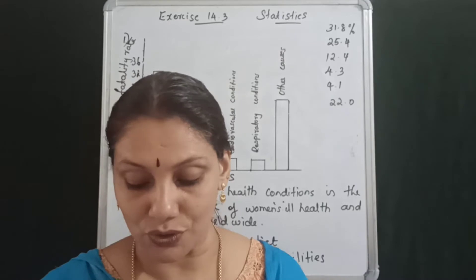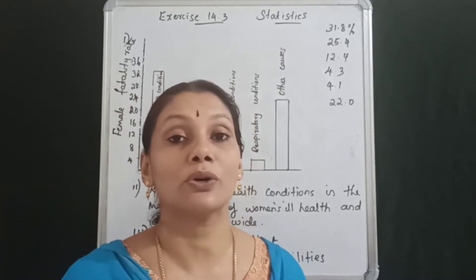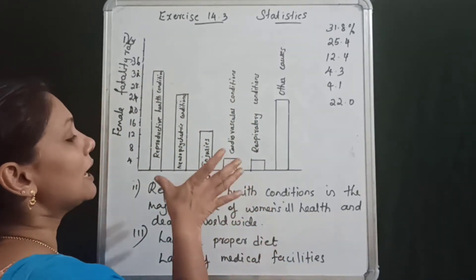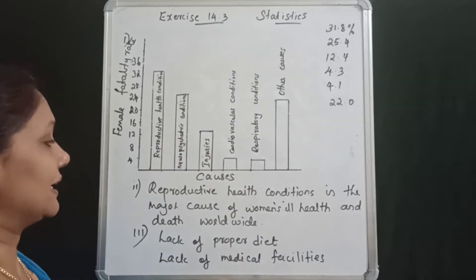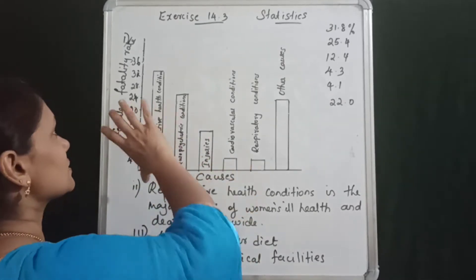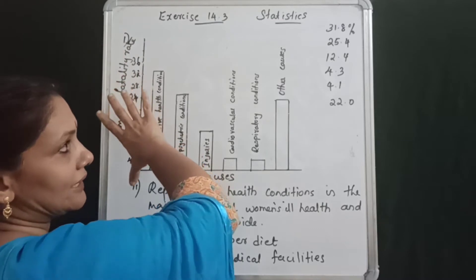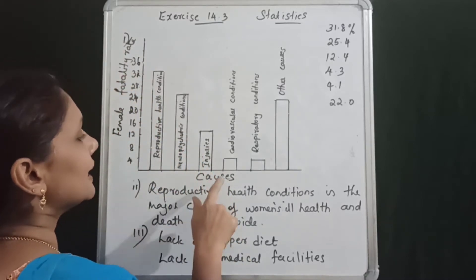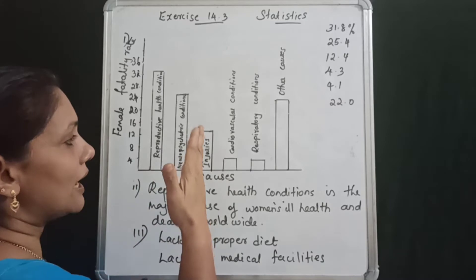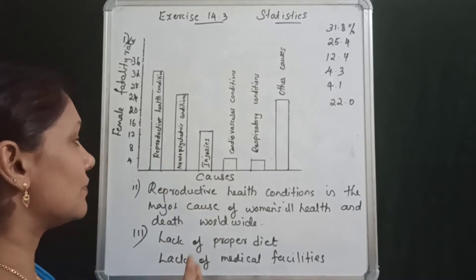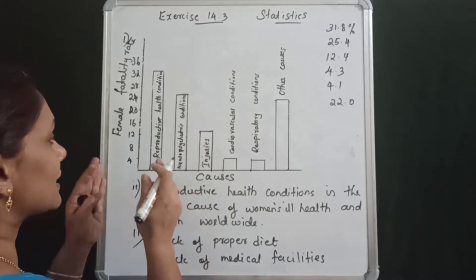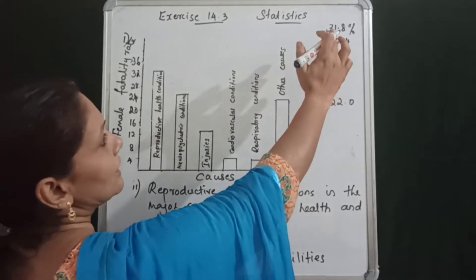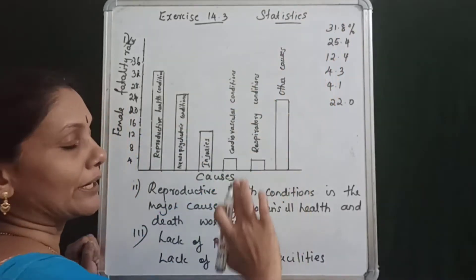The question asks us to represent the information graphically. You can see that it is a bar graph. The cause is female adultery rate. Here is the bar graph. The reproductive health bar shows 31.8.